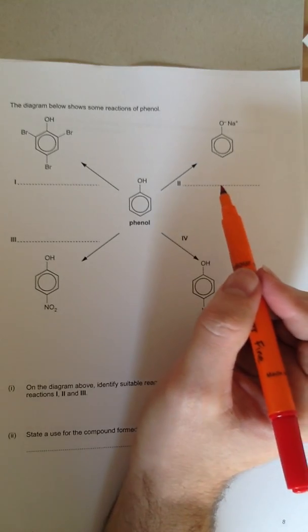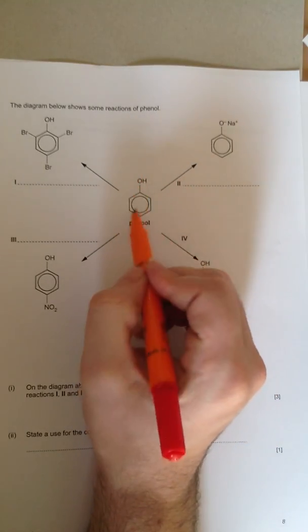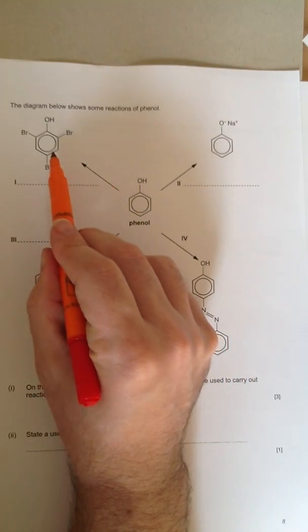The way to do this, if you don't know the reactions, is to spot the difference. Look at your starting material, look at this thing you're starting with, phenol, and work out what atoms are different from that, from your product.